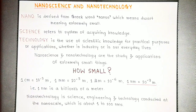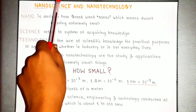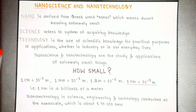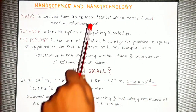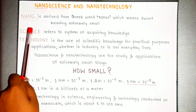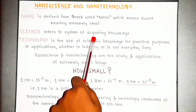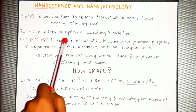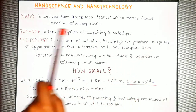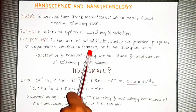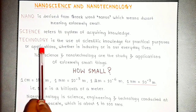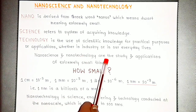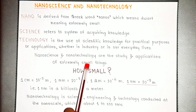Before knowing the exact definition of nanoscience and nanotechnology, let's split these words into nano, science, and technology. Nano is derived from the Greek word 'nanos' which means dwarf, meaning extremely small. Science refers to a system of acquiring knowledge, while technology is the use of scientific knowledge for practical purposes or applications, whether in industry or in our everyday lives. So in simple words, nanoscience and nanotechnology are the study and applications of extremely small things.